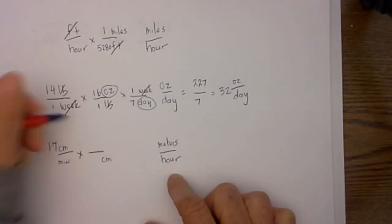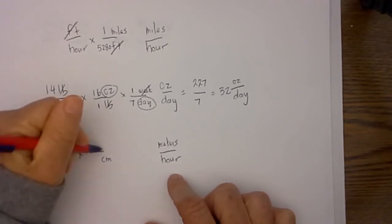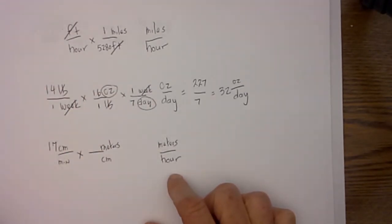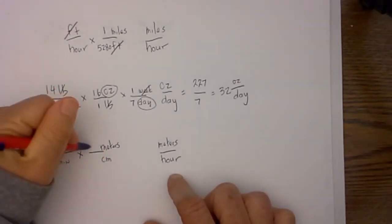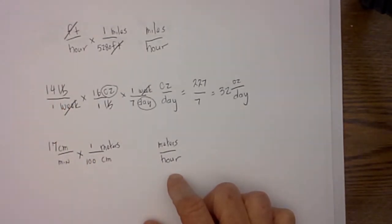I will place a centimeter on the bottom so they will cancel. I will place meters on top because that is my goal. Then I ask myself which is larger, meter or centimeters? One meter equals 100 cm.